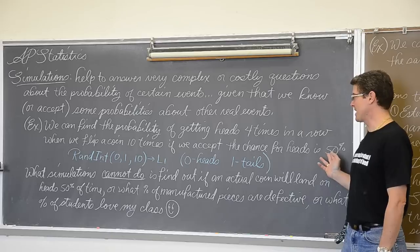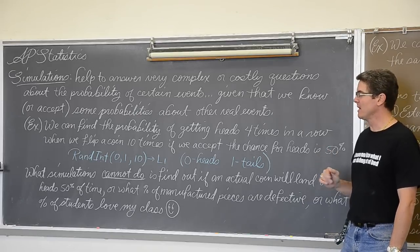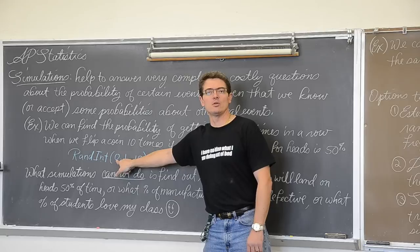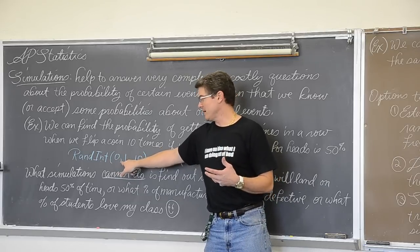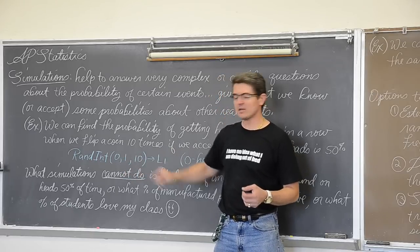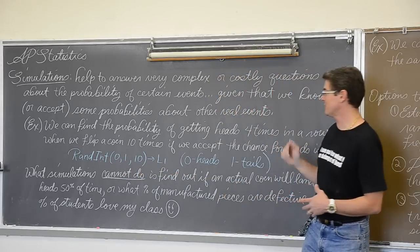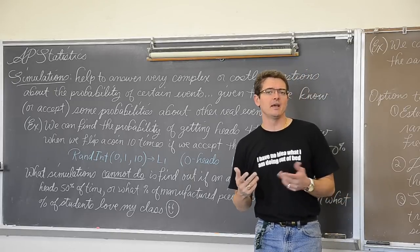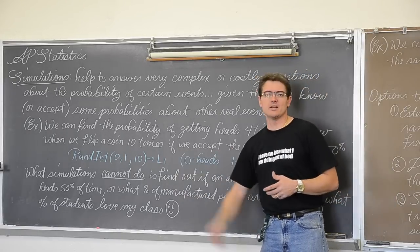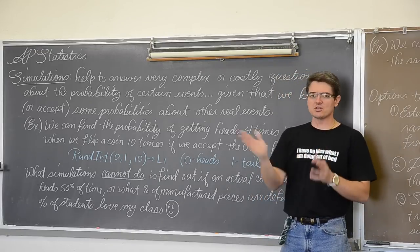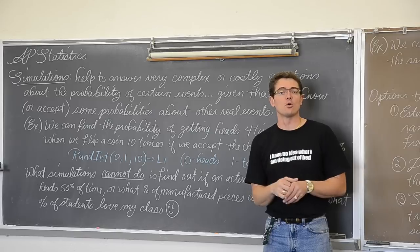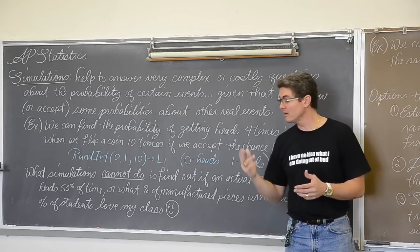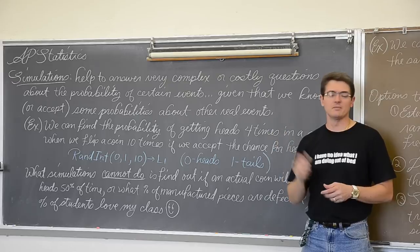If we accept the chance for heads as being 50%, you would do randint(0,1) on your calculator, the minimum and maximum number you want to create randomly. You want to look at ten numbers to represent the simulation of ten flips. You can store those in list one and then just scroll through those numbers to see if you have a run of at least four outcomes in that simulation of ten flips.